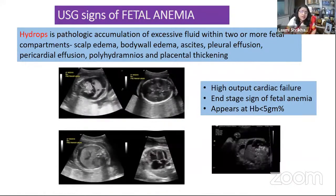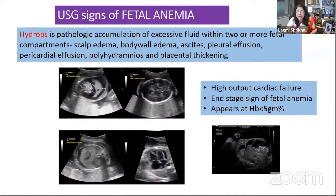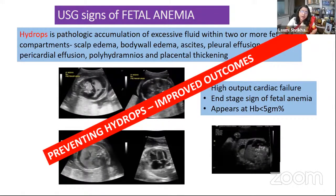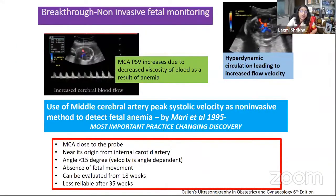Hydrops is the pathological accumulation of excessive fluid within two or more fetal compartments. You can see scalp edema or body edema, ascites, pleural effusion, pericardial effusion, polyhydramnios, and placental thickening. Because of high output cardiac failure, this is the end stage sign of fetal anemia. Hydrops is usually visible when the fetal hemoglobin drops to less than 5 grams percent. By preventing hydrops, we can improve the outcome of these RH negative pregnancies.